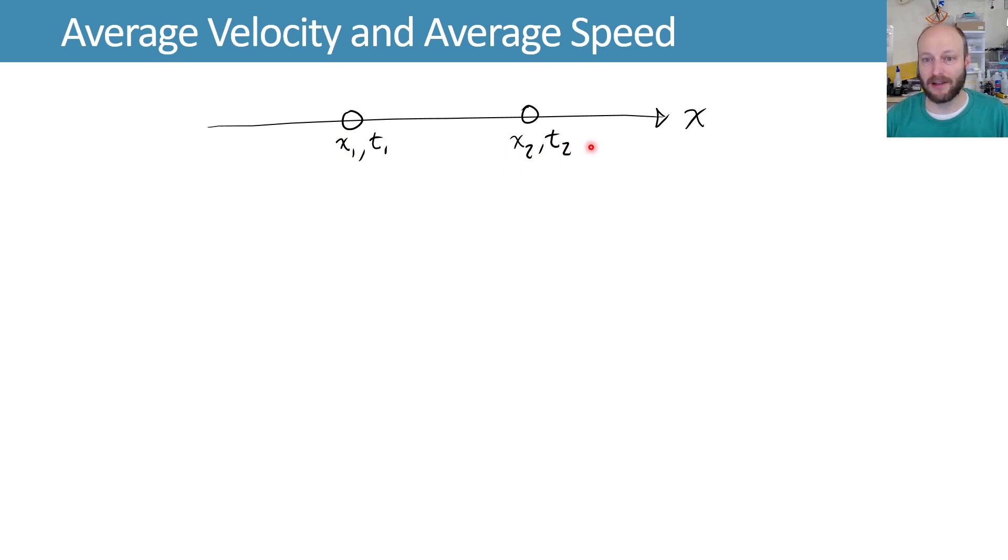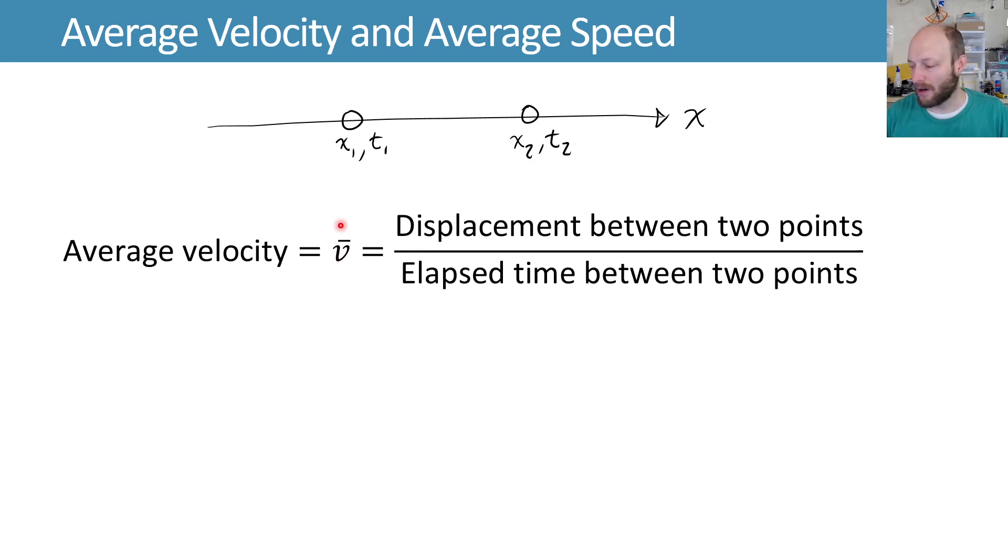We can define our average velocity, v bar, so this is a bar over the top to indicate the average, as the displacement between those two points divided by the elapsed time that it takes to travel between those two points. If we replace this with our displacement, our displacement is going to be final minus initial, or x2 minus x1. And then our time elapsed is going to be time 2 minus time 1. So we can say my average velocity is the change in x divided by the change in time, or x2 minus x1 over t2 minus t1.